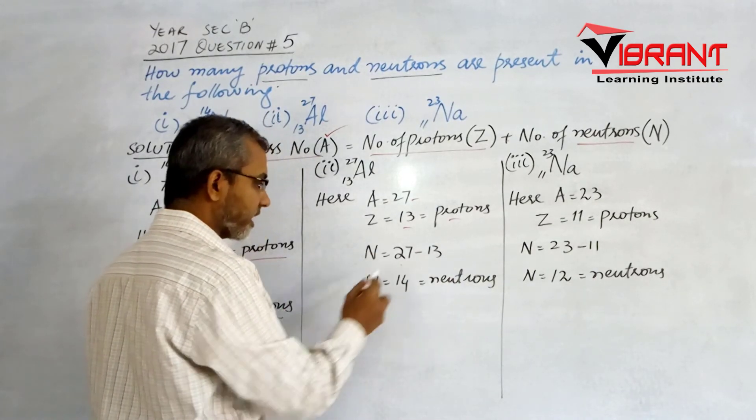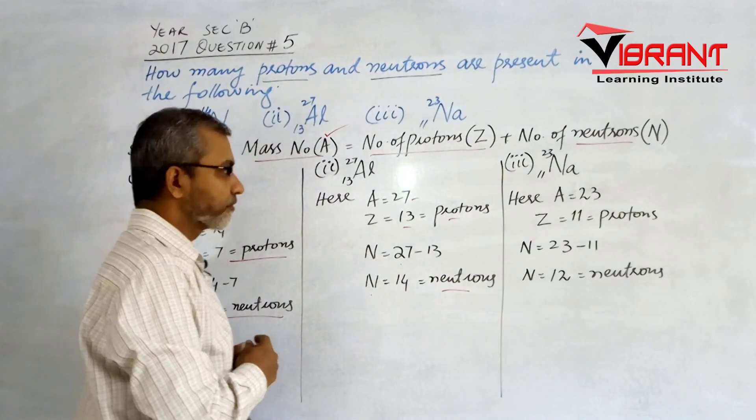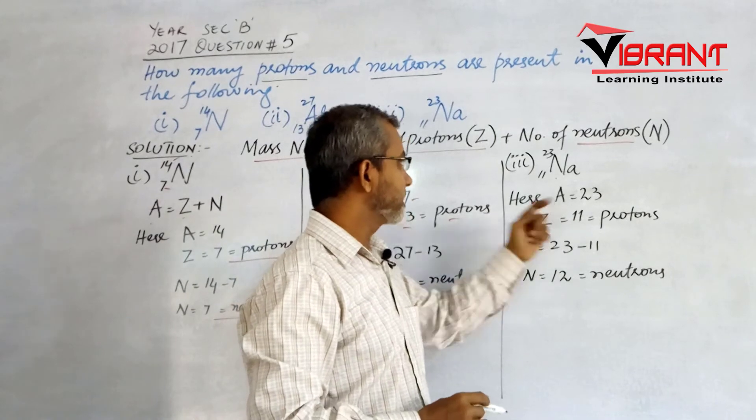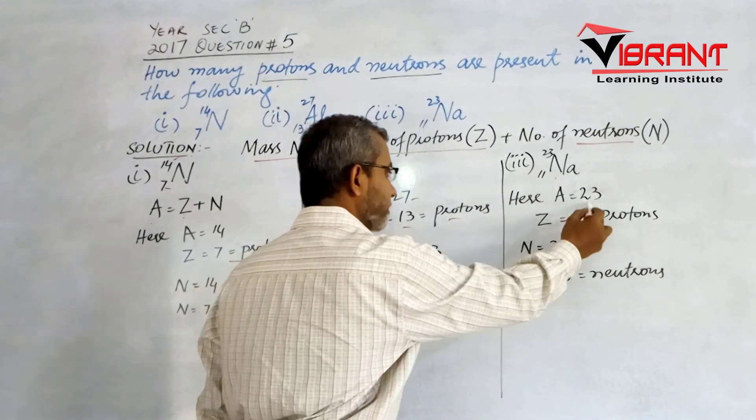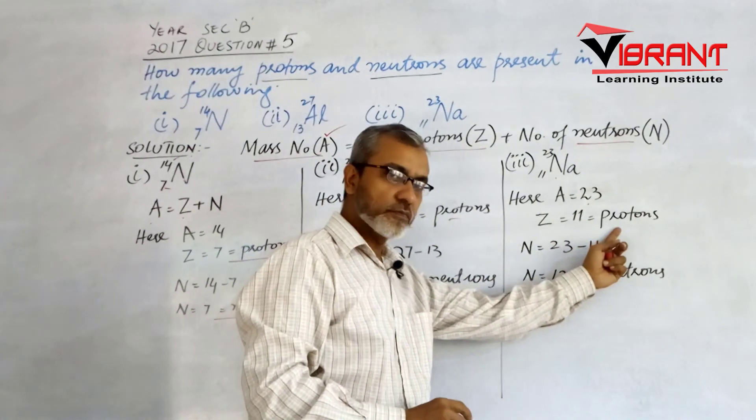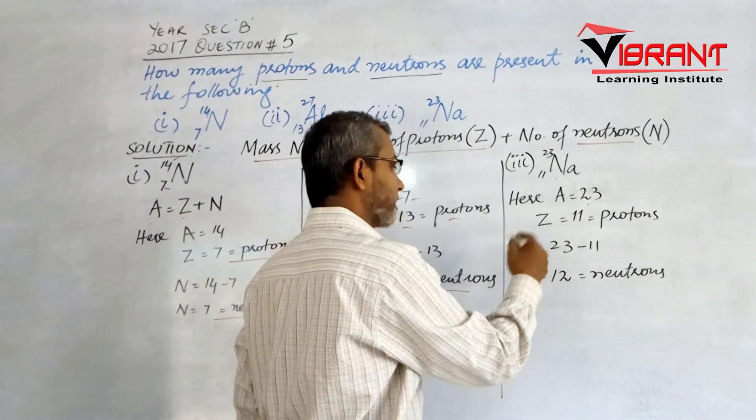For sodium, the mass number A is 23 and Z is 11, so the number of protons is 11.